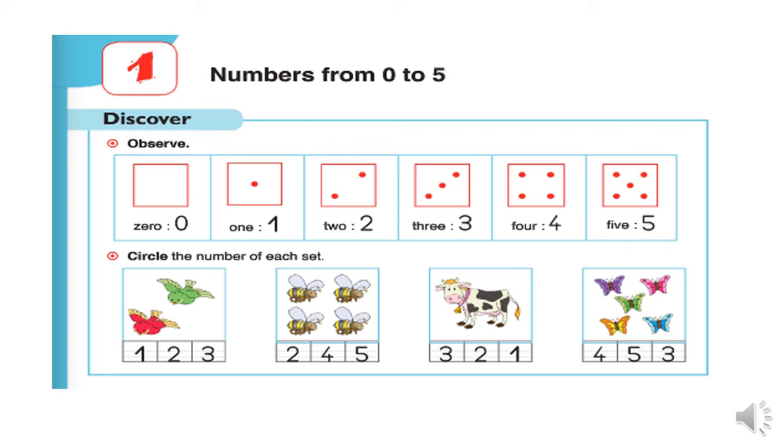Now, let's circle the number of each set. Here we have birds. Let's count. How many birds do we have here? One, two. So, we circle number two.